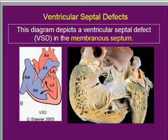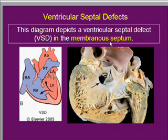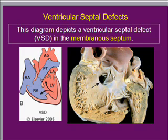A small VSD will spontaneously close within two years of life. VSDs which are big need to be closed. Most VSDs — ventricular septal defects or holes in the interventricular septum — can be seen on the membranous component of the septum, as shown by the arrow indicating a hole in the septum.